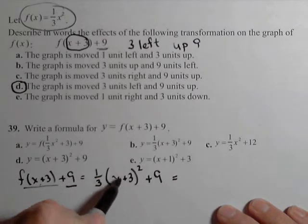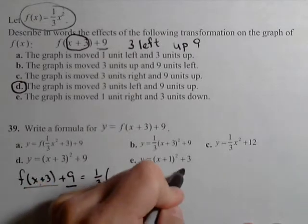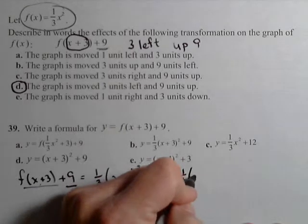Now a common mistake is to distribute this square and write it as x squared plus three squared. Can't do that, it has to be foiled out. And you wanna foil it, it's gonna be better to foil it out before you multiply in the one-third.